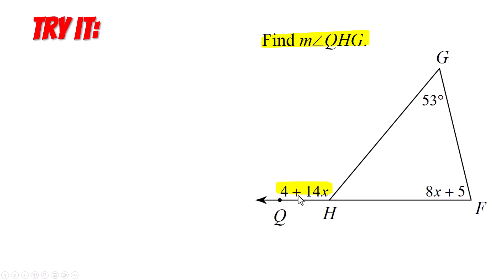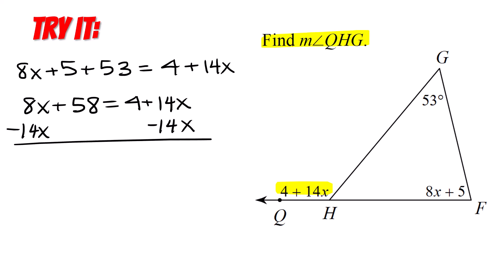So here's our exterior angle. We're going to need to add these two guys together. So 8x plus 5 plus 53 equals 4 plus 14x. That's the geometry. Boom. Now it's algebra. We're going to combine those constants on that one side. 5 plus 53 is 58, and now I'm going to subtract the 14x from both sides because that's just the mood I'm in today. And we end up with 8x, well 8x minus 14x is negative 6. So that's negative 6x plus 58 equals, these 14x cancels out, so the 4 drops down.